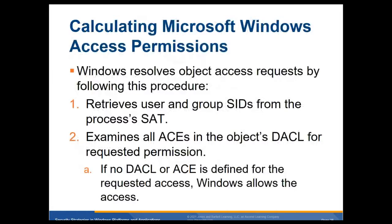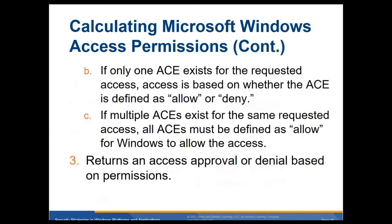Calculating access permissions in Microsoft Windows — Windows resolves objects' access requests by: retrieving user and group security identifiers from the process's security access token; examining all access control entries in the object's DACL for requested permissions. If no DACL or ACE is identified for the requested access, Windows allows it. If only one ACE exists, access is based on whether the ACE is allowed or denied — deny always takes precedence over allow. If multiple ACEs exist for the same request, all ACEs must be defined as allowed for Windows to grant access; if there is one deny, it takes precedence over all others.